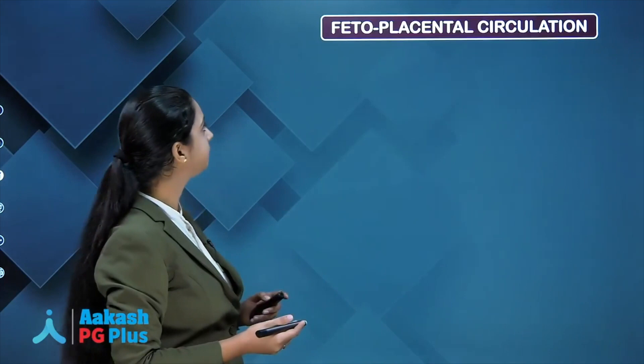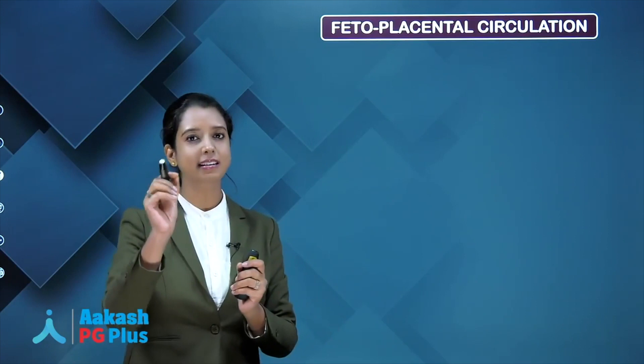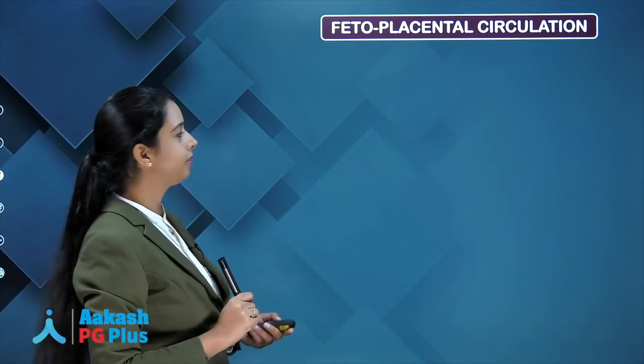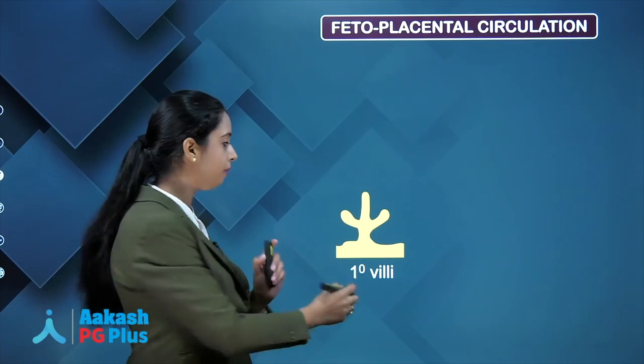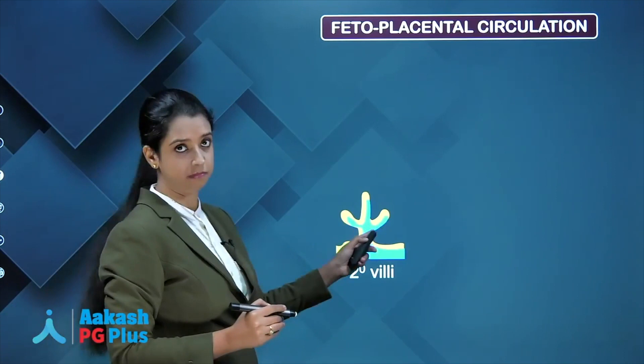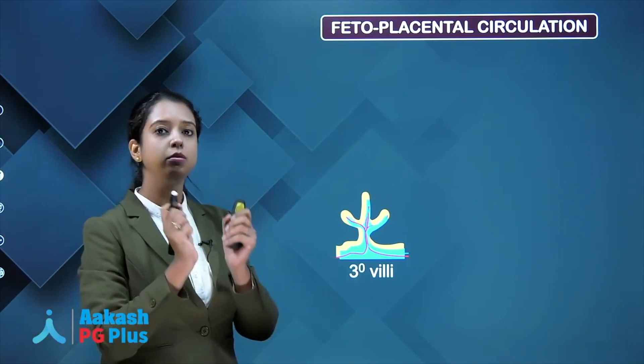Now we will discuss fetoplacental circulation. Placenta has formed and now the circulation has to be set up — be very attentive because it is a little tricky. This is the primary villi, formed by villus trophoblast. When this villi is invaded by mesoderm, it is called secondary villi. When fetal blood vessels come and lie inside that mesoderm, it is called tertiary villi. The unit of placenta is tertiary villi, and these tertiary villi lie together to form the placenta.